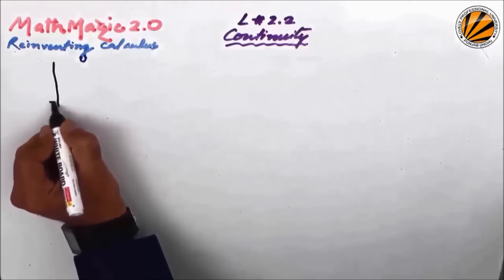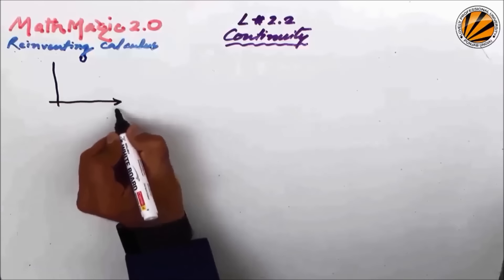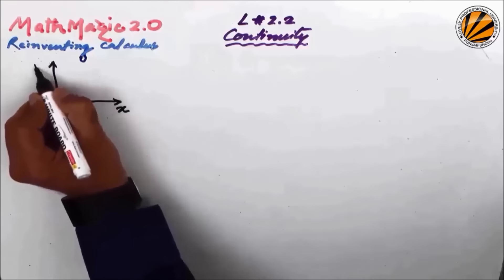Here we are going to look at whether a function is continuous or not. The word continuous in its literary form means that if I can draw the function in the input-output graph without raising a pencil — meaning there is no abruptness, no discrepancy in the continuum of the graph — then the function would be treated as continuous.